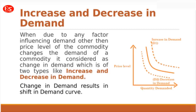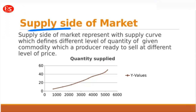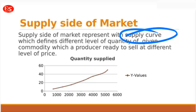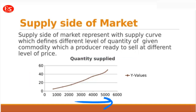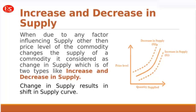Now let's look at the supply side. The supply of the market is represented by the supply curve, which defines the different quantities of a commodity that a producer is ready to sell at different price levels. As price goes up, the quantity supplied also goes up — meaning price and quantity supplied have a direct relationship. In contrast to demand, where price and quantity have an inverse relationship, in supply they have a direct relationship.